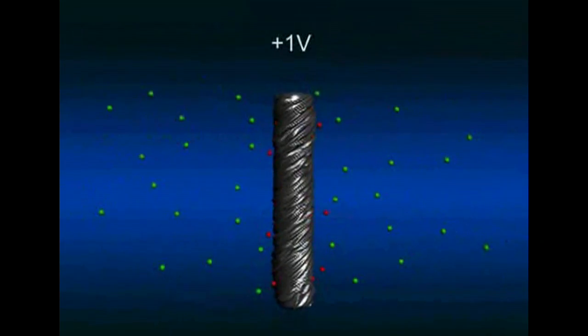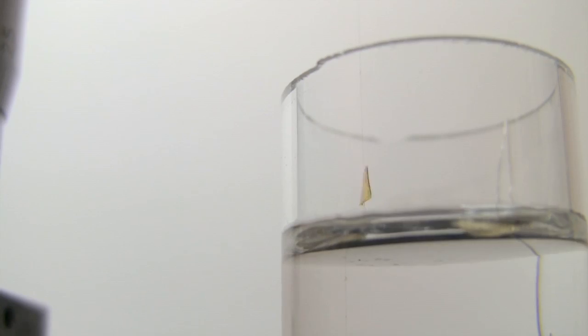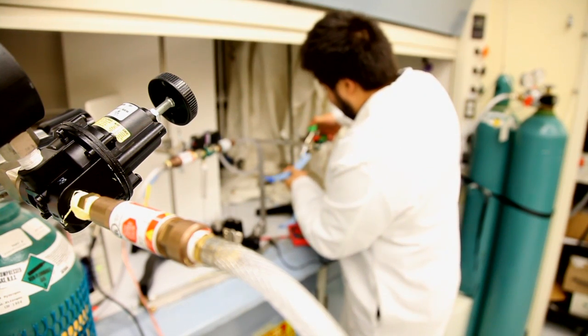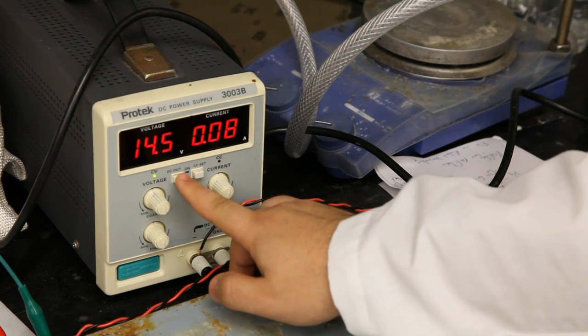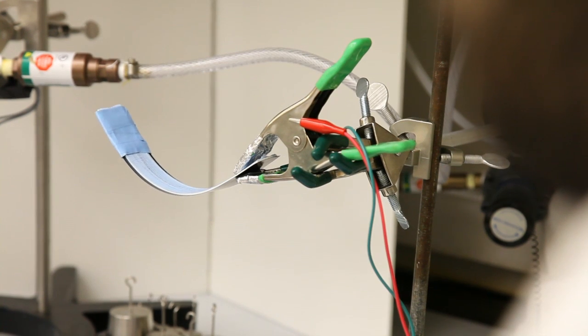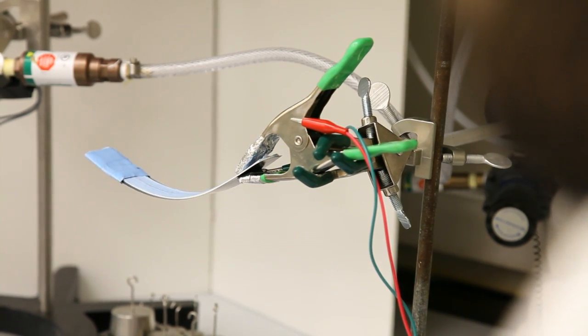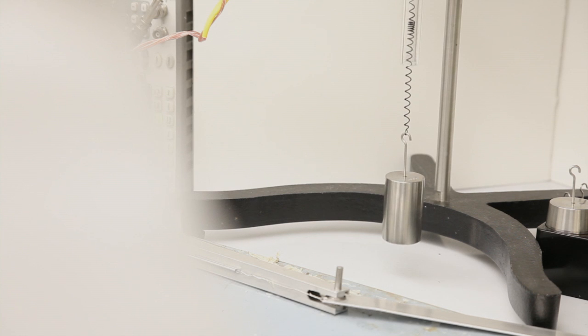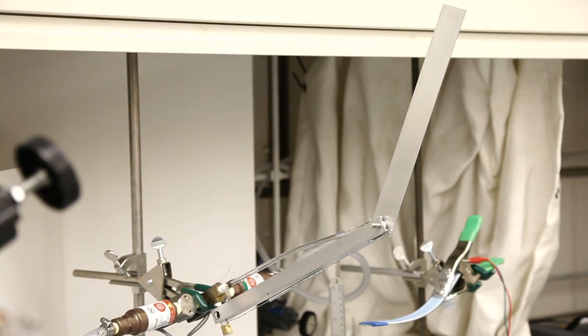And this increase in volume provides a pressure which causes the carbon nanotube muscles to rotate. We're developing these muscles that could be used in the clothing of the infirm to help amplify feeble muscle efforts to provide useful tasks.